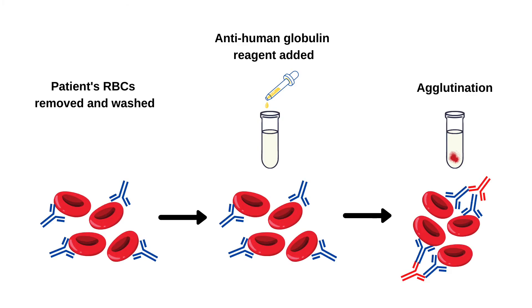So how is a direct Coombs test performed? It's actually quite simple. We're suspecting that this patient has already had a hemolytic reaction, so we need to get a blood sample from the patient. The patient's RBCs are removed and washed in order to get rid of any antibodies that are not attached to the RBC surface. We then add the anti-human globulin reagent, which involves antibodies with multiple binding sites for the antibodies bound to the red blood cell surfaces. This will cause visible agglutination in the test tube, which would be a positive result, indicating that the patient has had some sort of hemolytic reaction.